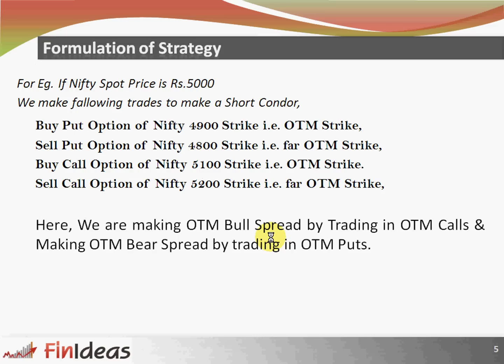For strategy formulation, say for example if Nifty spot price is 5000, we make the following trades to make a short condor. First, we buy a put option of Nifty 4900 strike, that is our OTM strike, and sell put option of Nifty 4800 strike, that is our far OTM strike. We buy call option of Nifty 5100 strike, that is our OTM strike, and sell call option of Nifty 5200 strike, that is our far OTM strike. Combining these four trades we make a short condor. We are making an OTM bull spread by trading OTM calls and an OTM bear spread by trading OTM puts.